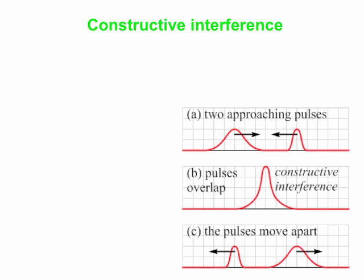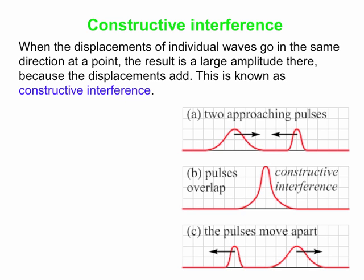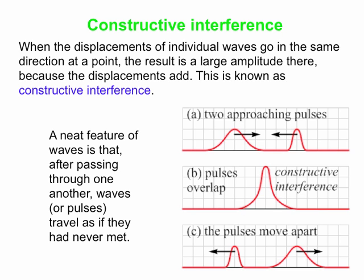Let's talk about constructive interference in particular. What happens here is that the resulting amplitude is larger than the individual amplitudes, because both individual waves give displacements in the same direction, so they always add together. A neat feature of this is that waves approaching each other, say along a string, add together and give you this big constructive interference for a small time interval, and then they just move apart as if they've never met.